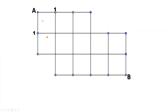We start from point A. You can move to the right — to reach this point, you only have one way. Or you can move to the south — to reach this point, you only have one way. Because you cannot go back. You cannot go to the left like this. It's impossible.